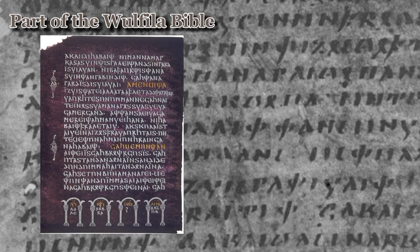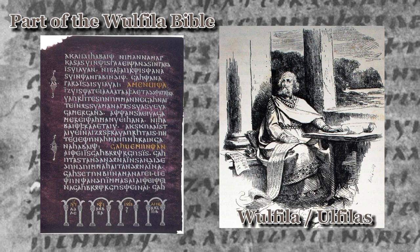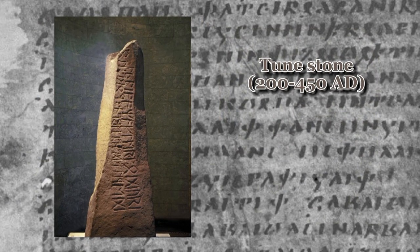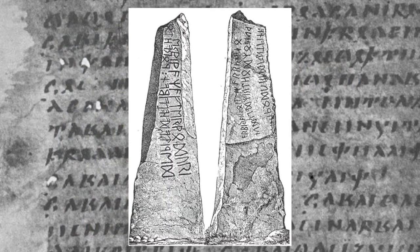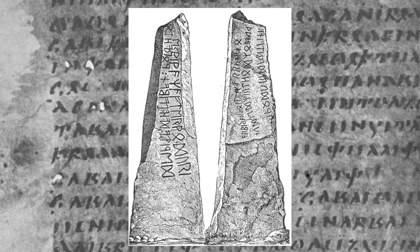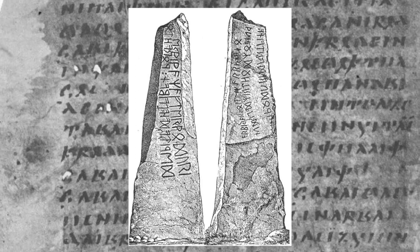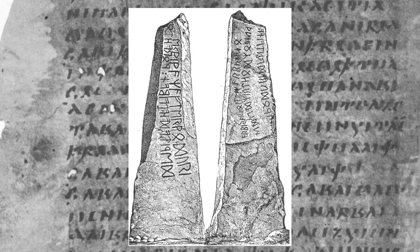Reconstruction was done using the oldest existing records. The first comprehensible text in a Germanic language is the Gothic Bible, translated by the Arian bishop and missionary Wulfila in the fourth century. Another important artifact with Proto-Germanic origins is a tombstone dating back to around 200–450 AD — a rune stone with several inscriptions in Proto-Norse, an Indo-European language spoken in Scandinavia from the second to eighth century, claimed to have evolved as a northern dialect of Proto-Germanic.